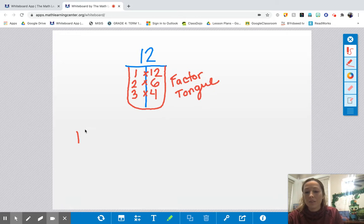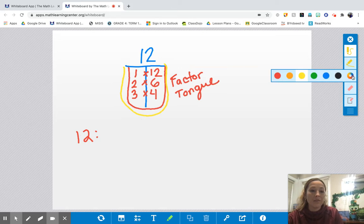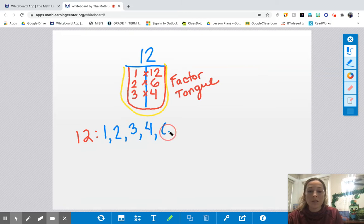So what you do is we found all the factors of 12 and we write all the numbers in order. And what I like to do is I just follow the tongue all the way from the 1 back to the number. We started with 12 and I write the numbers out in order. So 1, 2, 3, 4, 6, 12. And there's my factors of 12.